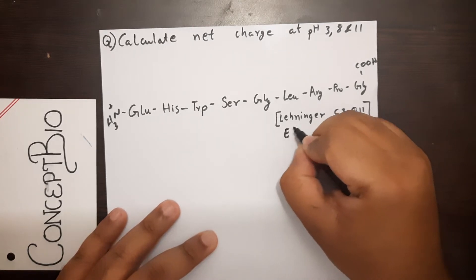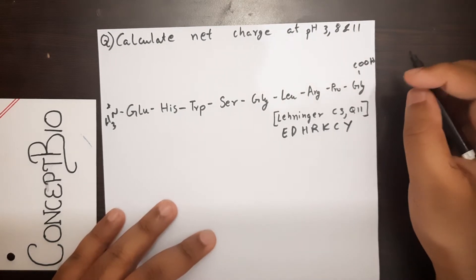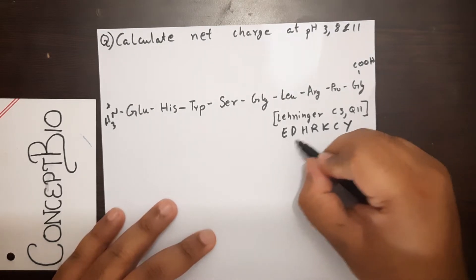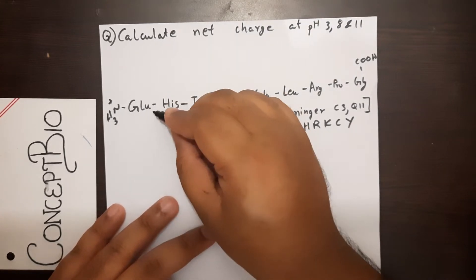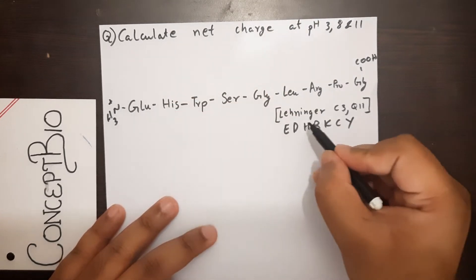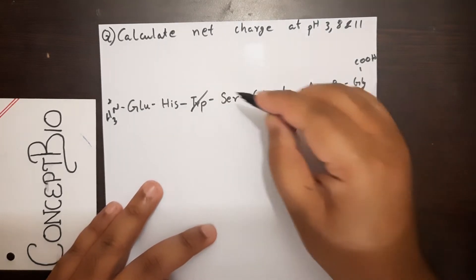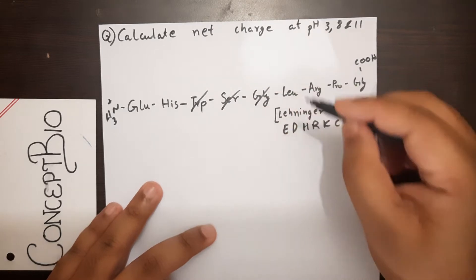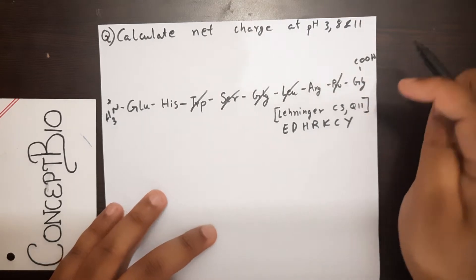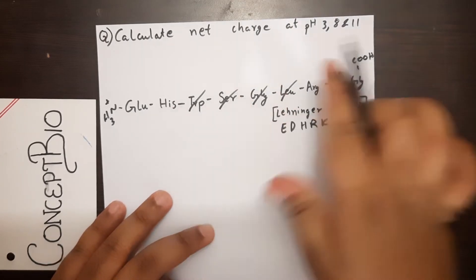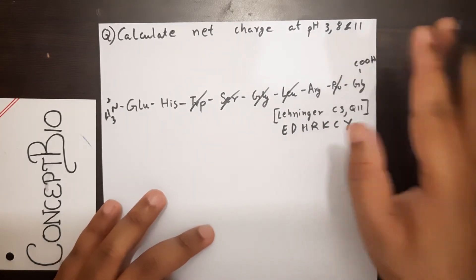The triprotic amino acids are E, D, H, R, K, C, and Y — the acidic, basic, cysteine, and tyrosine ones. In our polypeptide: glutamic acid — yes, triprotic; histidine — yes; tryptophan — no; serine — no; glycine — no; leucine — no; arginine — yes; proline — no. I'm keeping glycine here because it's a terminal group participating in solvent interaction.